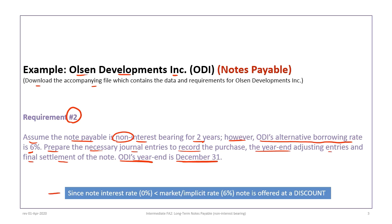An important note regarding present value of money: once we go beyond one year, we must use time value of money calculations. Since the note's interest rate is 0%, we compare it to an implicit or market rate — that's where the incremental borrowing rate comes in. Because the interest rate on the note is less than the 6% alternative borrowing rate, this note is offered to ODI at a discount.